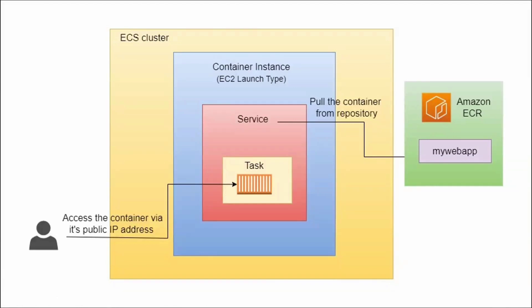In a general scenario, that doesn't work well — we require multiple tasks to provide high availability. It's also not feasible to provide a specific IP address to users. Additionally, if we are using dynamic port mapping, we don't even know the port on which our container is running, so we can't access the container directly via its public IP address.